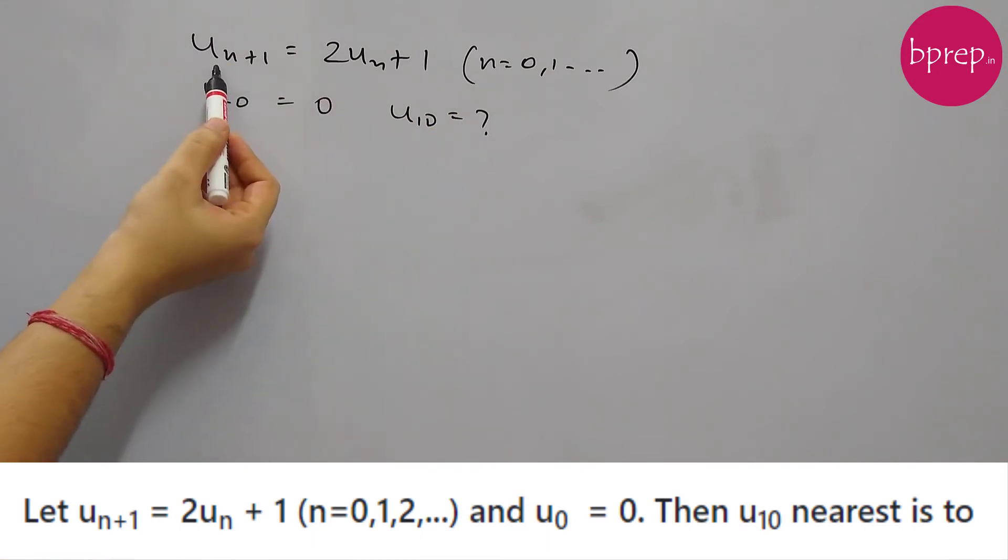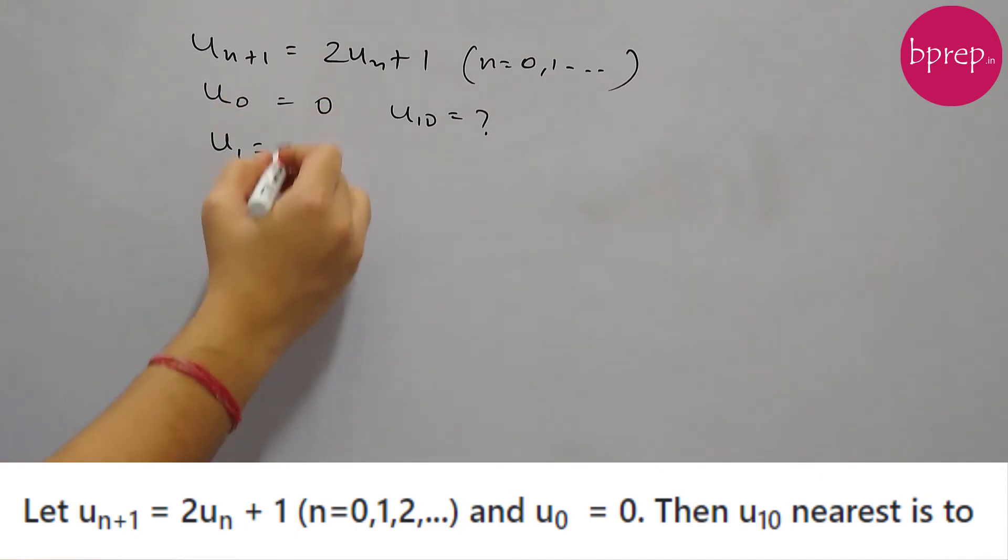To find out u_10, we see from this expression the next term has a dependence on the previous term. So we have u_0, so from this we will be able to find out u_1. So u_1 will be 2u_0 + 1, and u_0 is 0, so this will be just 1.